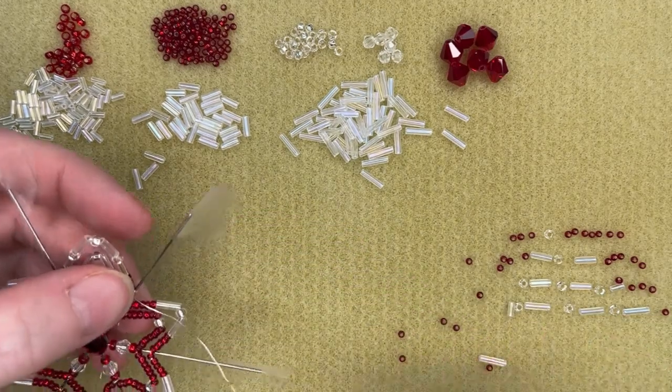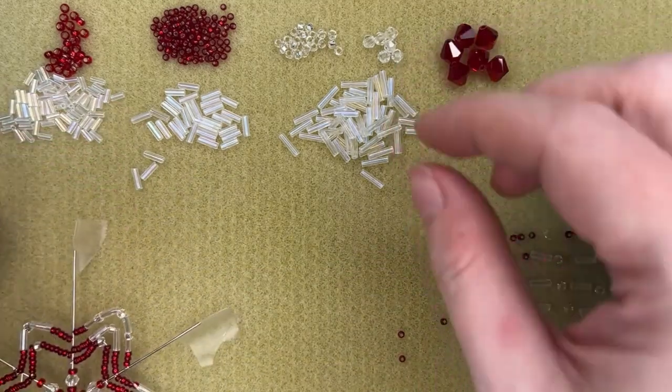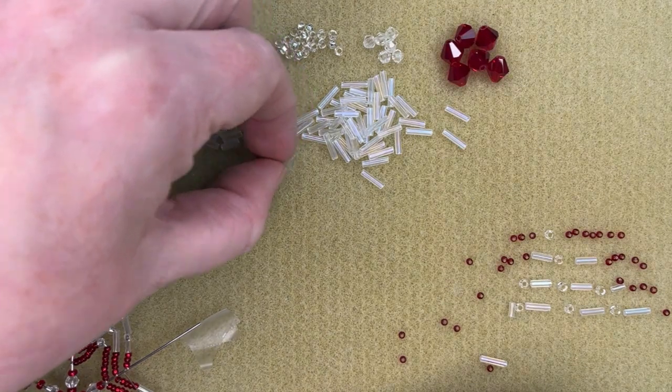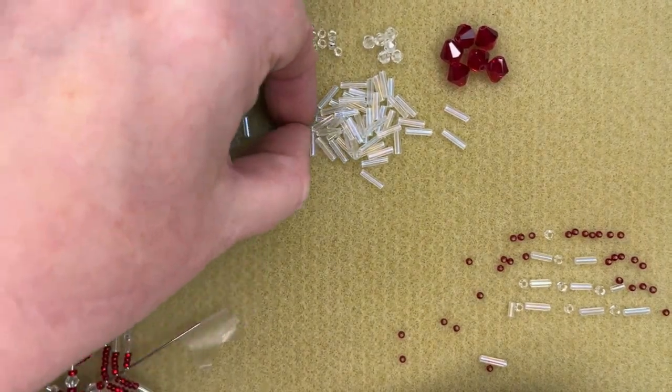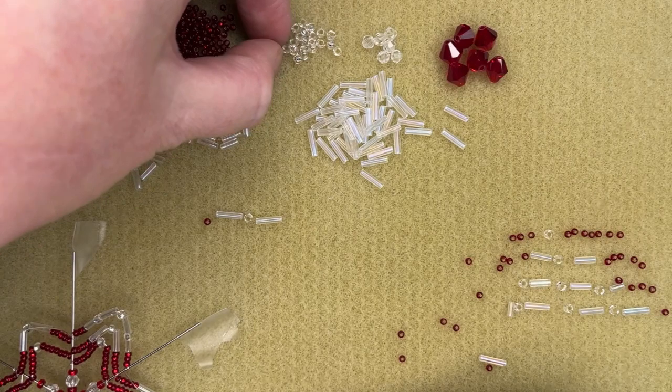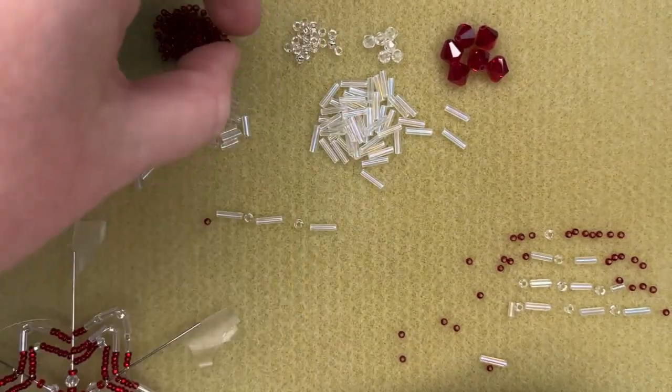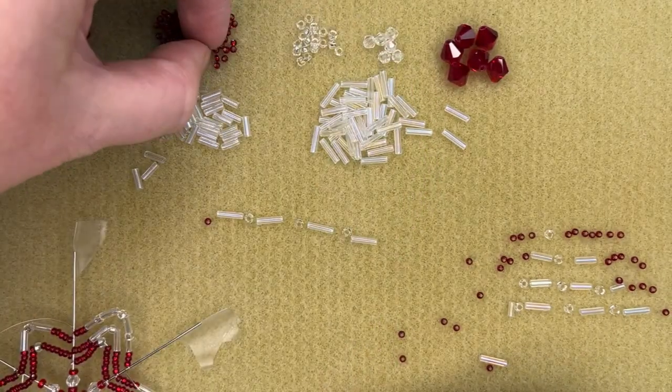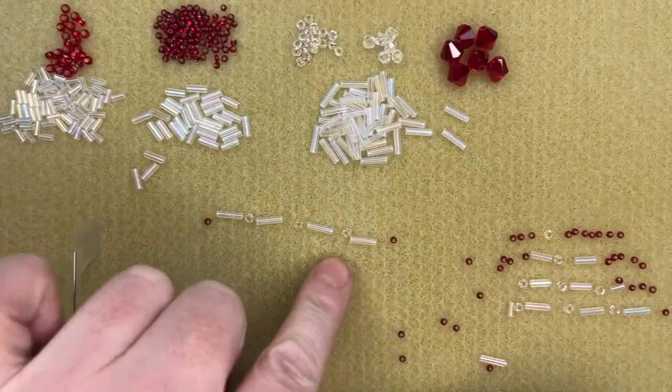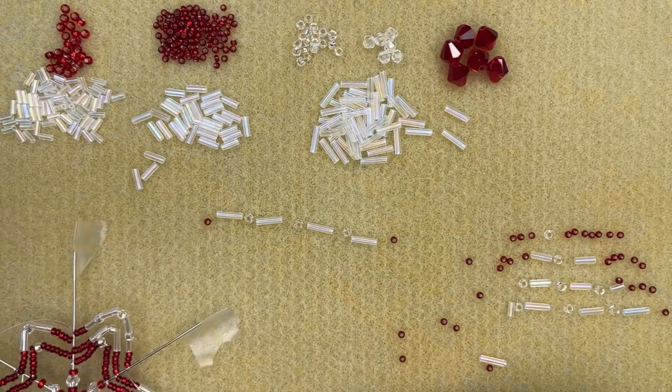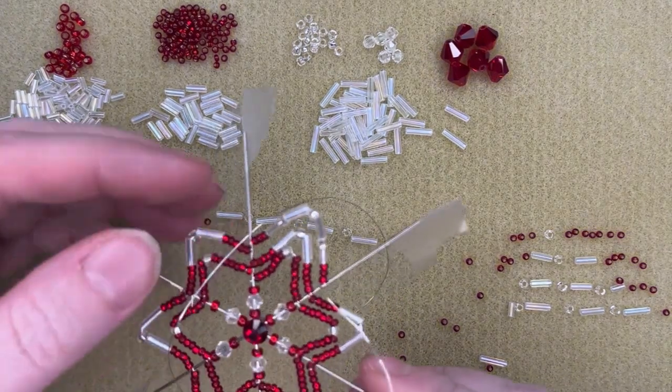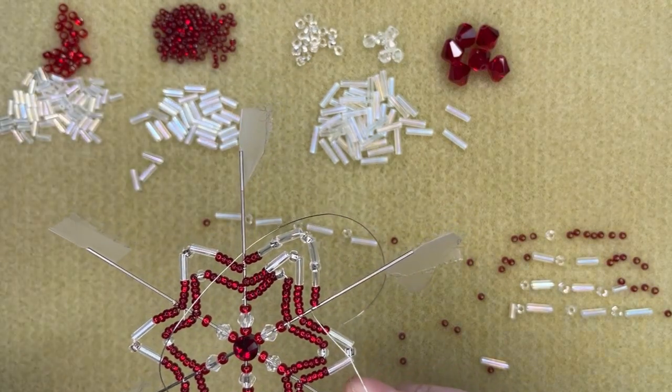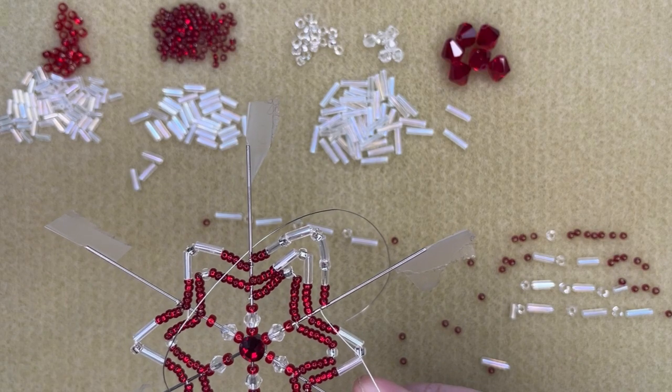And there's one more row after that, and that row consists of one size ten. And then we're going to do four of the size four bugles with a size eight seed bead in between, and then one more of the size ten. So that is your fourth row. So I'm going to complete this to the point where I'm ready to add the end little beads on the spoke and to turn the loop, and I'll show you how to do that.